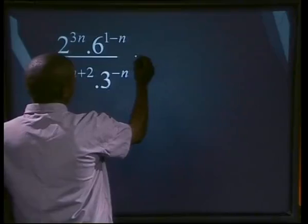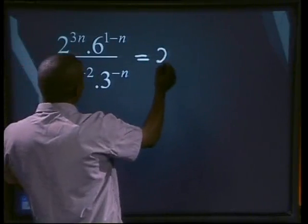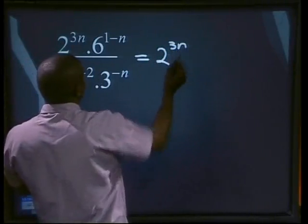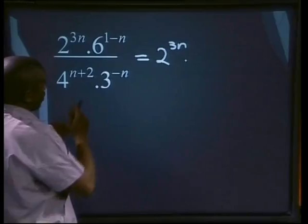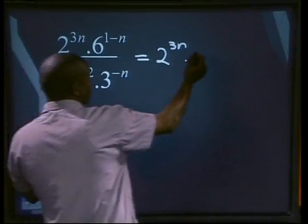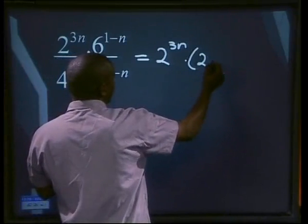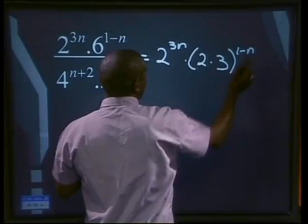So in this case here, 2 is a prime number. So 2 can be written as 2 to the power of 3n, multiplied by, our 6 is not a prime number. What are the prime factors of 6? It will be 2 times 3, that means that we can write it as 2 times 3, all to the power of 1 minus n.